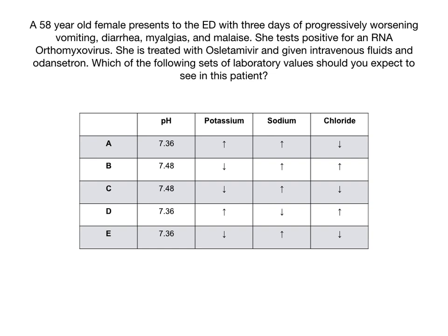Assuming that you've looked over A through E, we're going to continue. Please pause the video if you need more time to review the answer choices. The answer to this practice question is choice C: a pH of 7.48, a decreased potassium, an increased sodium, and a decreased chloride.